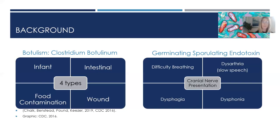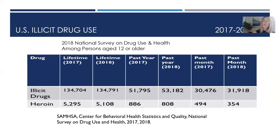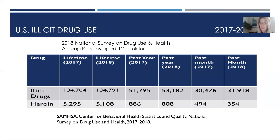Presentations of symptoms when individuals seek help at the hospital include difficulty breathing, a very slow speech pattern, inability to swallow — dysphagia — and inability to project their voice. According to the National Survey on Drug Use and Health among persons age 12 and older, total drug use over 2017–2018 shows values for lifetime use, past year, and past month, illustrating the difference between illicit drug use broadly and heroin specifically.